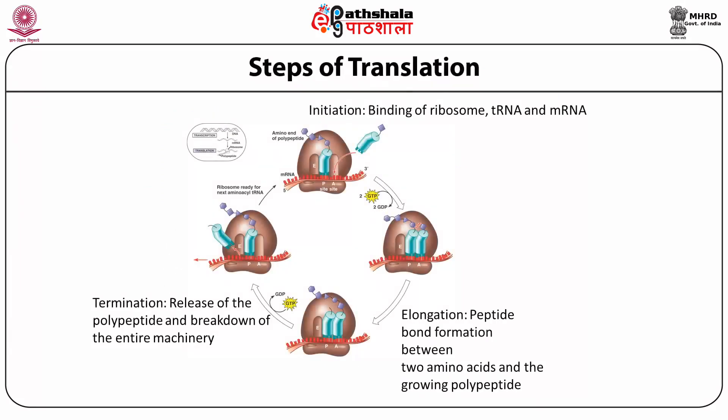Steps of translation: First, initiation — binding of ribosome, transfer RNA and messenger RNA. Second, elongation — peptide bond formation between two amino acids and addition to the growing polypeptide. Third, termination — release of the polypeptide and breakdown of the entire machinery.